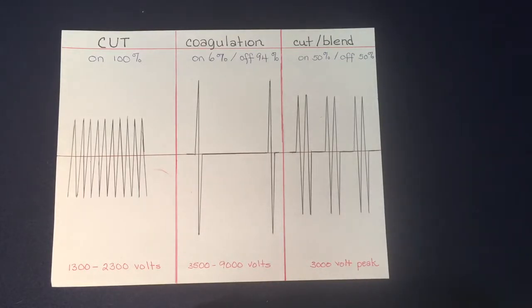You can put blend and add that to it, and what you're doing is adding some coag to it. We used to have ones that had blend one, two, and three on it, so depending on which setting, one would have the least amount of coag added to the cut and three would have the most.